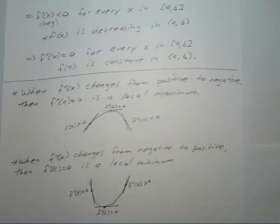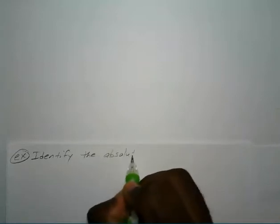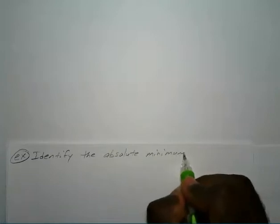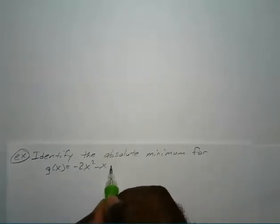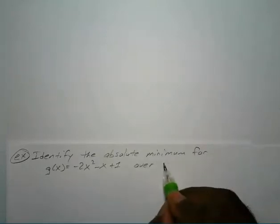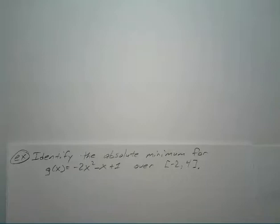If you are still writing, feel free to press pause. Now we're going to give an example of how to find your absolute minimum — and the same steps would work for the absolute maximum also. Let's say we wanted to identify the absolute minimum for g of x equals negative two x squared minus x plus one over the interval from negative two to four. I'm going to break this down into three steps.